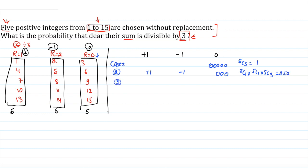In Case 3, we take 2 zeros and 3 remaining values. Those 3 can be: three from +1 (sum = +3, divisible by 3) giving 5C3 × 5C2 = 10 × 10 = 100; or three from −1 (sum = −3, divisible by 3) giving 5C3 × 5C2 = 100. Total for Case 3 is 200.